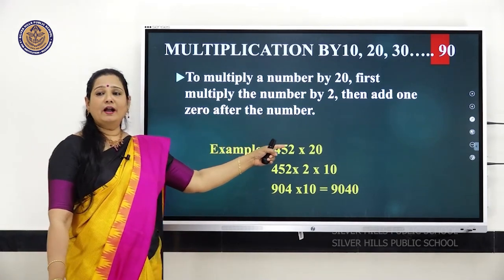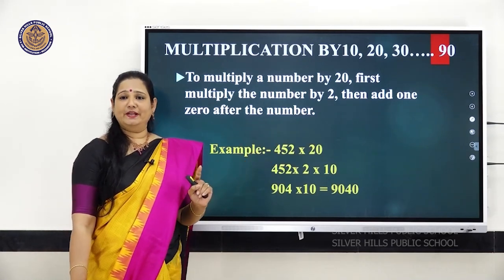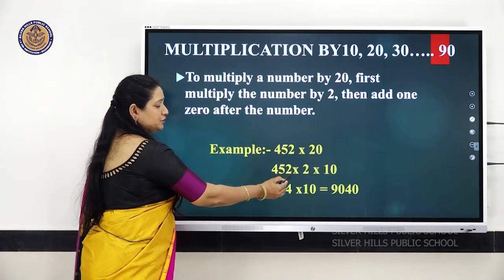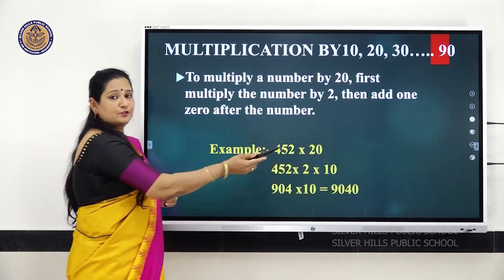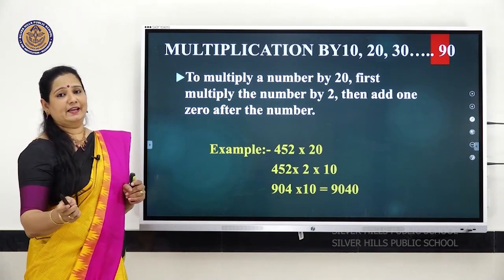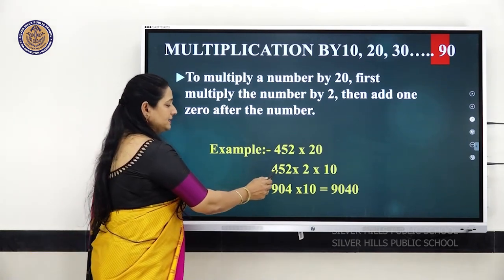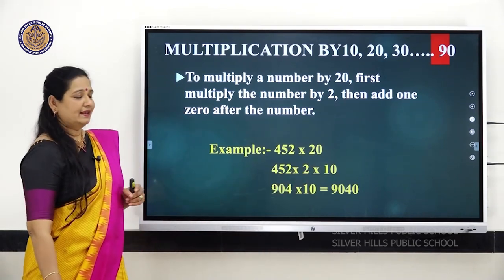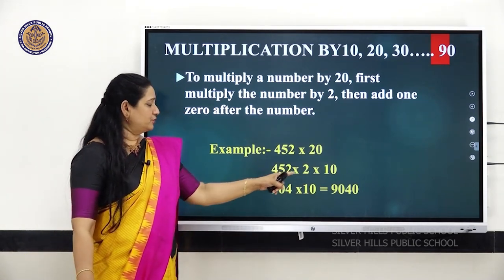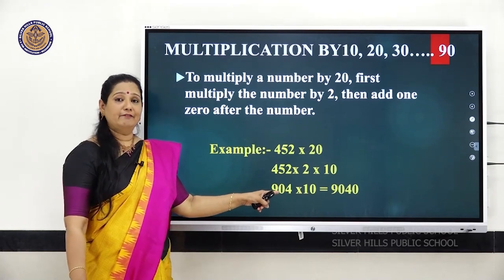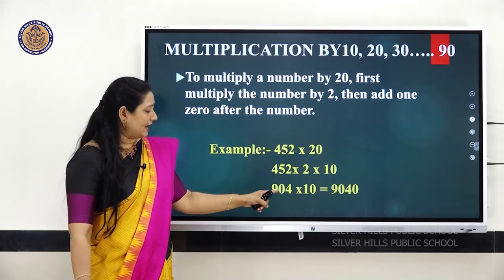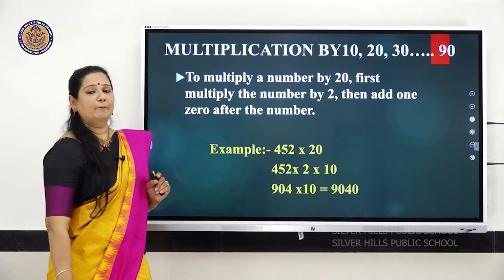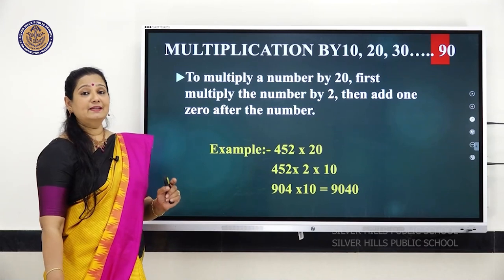For example, 452 into 20. You are going to break it as 2 into 10. So first write 452 into 2 into 10. You know 452 into 2 is 904. When you multiply 904 with 10, you add one extra zero, so the number becomes 9,040.